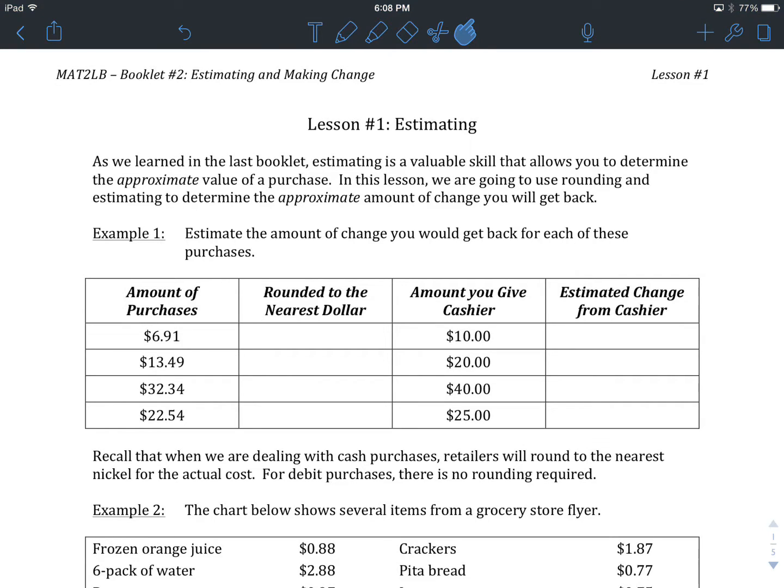This unit, booklet number 2, is an extension of a lot of the rounding that we did in our first booklet. We're going to look at it in the context of money in this lesson, so let's have a look at example number 1. Estimate the amount of change you would get back for each of these purchases.